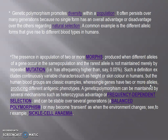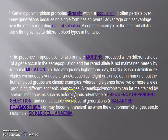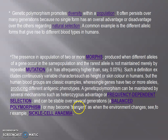Human blood groups are the classic examples where single genes have two or more alleles — the ABO blood group system, producing four types: blood group A, blood group B, blood group AB, and O, producing different antigenic phenotypes. A genetic polymorphism can be maintained by several mechanisms such as heterozygous advantage or frequency-dependent selection, or can be stable over several generations as balanced polymorphism, or it may become transient when the environment changes — for example, sickle cell anemia.